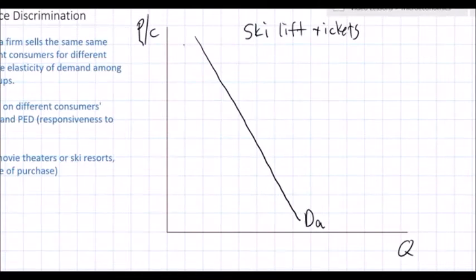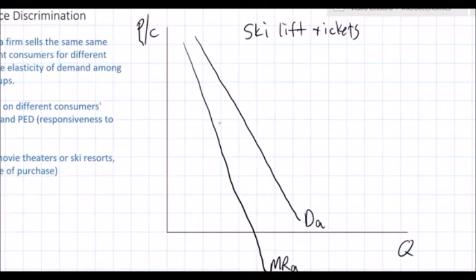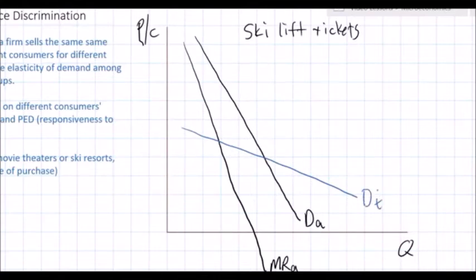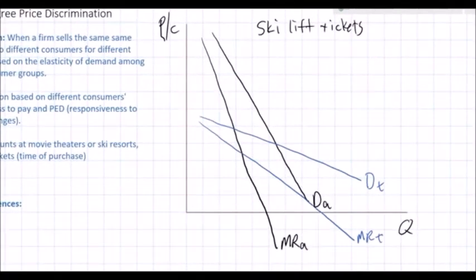The marginal revenue curve for adults slopes twice as steep as the demand curve. Teenagers have less disposable income and more alternative things they could do — hanging out with friends, going to the mall — so their demand is more responsive to price changes. We have a demand curve for teenagers DT and marginal revenue for teenagers MRT. I've now put two demand curves for the two different consumer groups the ski resort is trying to charge different prices for.